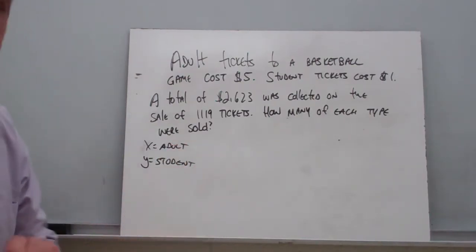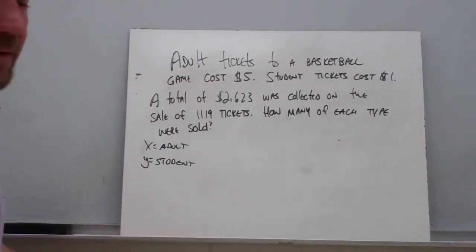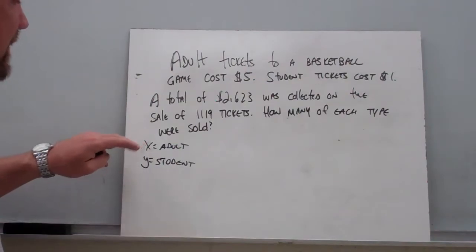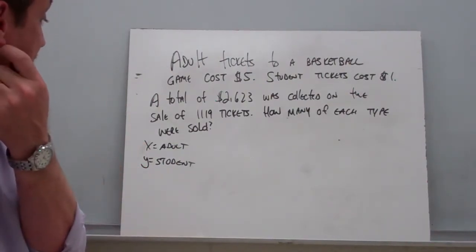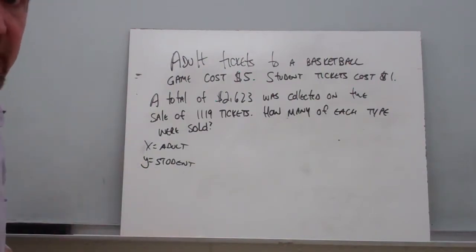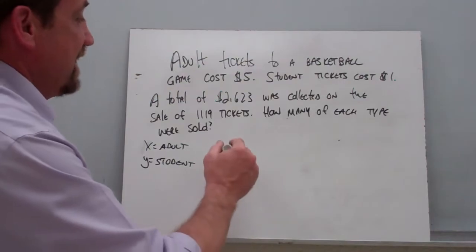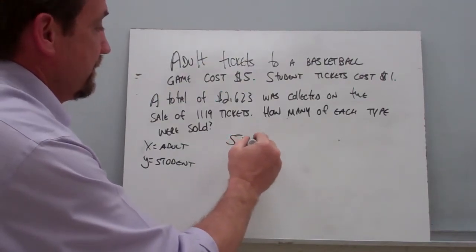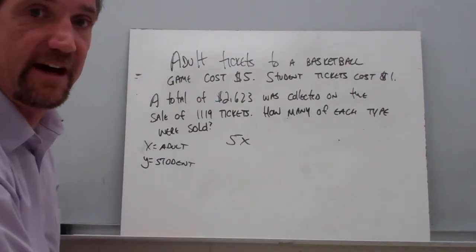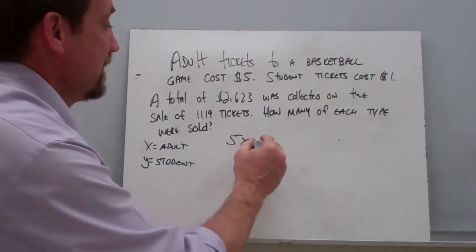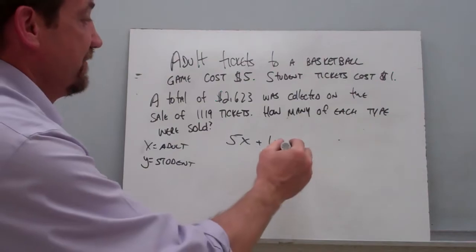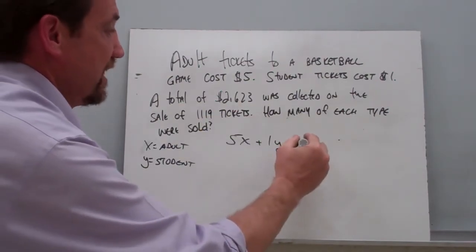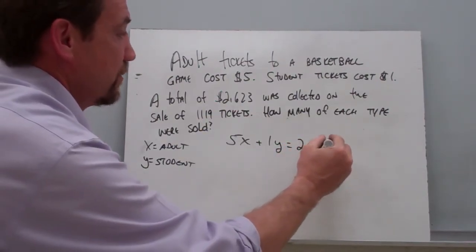Let's say we'll call the adult tickets X and the student tickets Y. We could use any variables but I tend to stick with X and Y. So X represents adult tickets and Y represents student tickets. I'm paying $5 for an adult ticket, so it's 5X. $5 per adult ticket plus $1 per student ticket, and that gave us a total of $2,623.